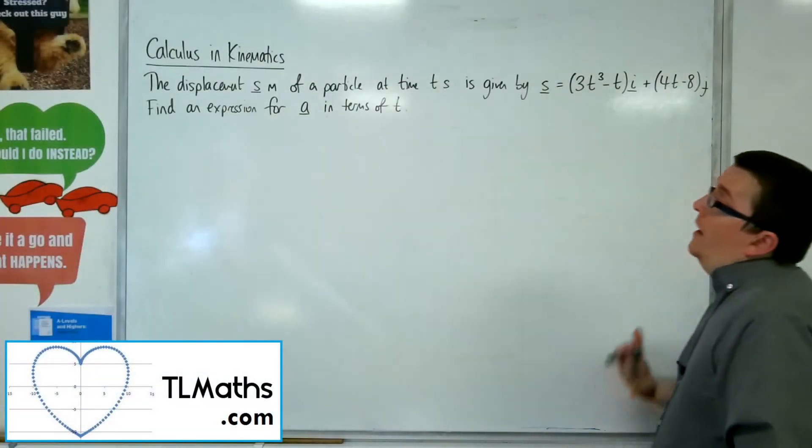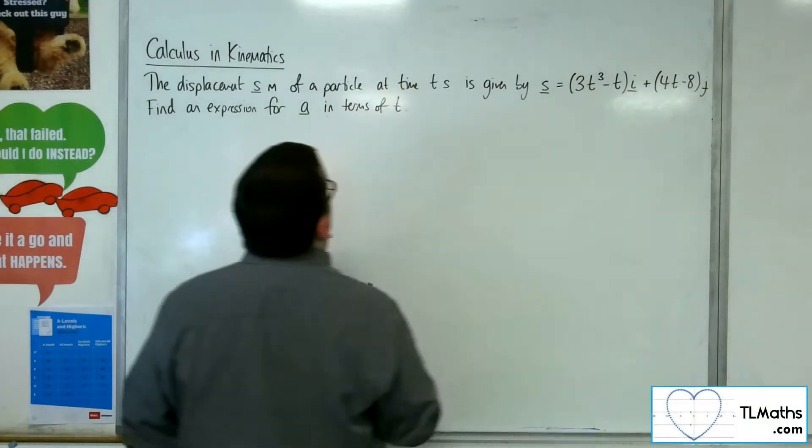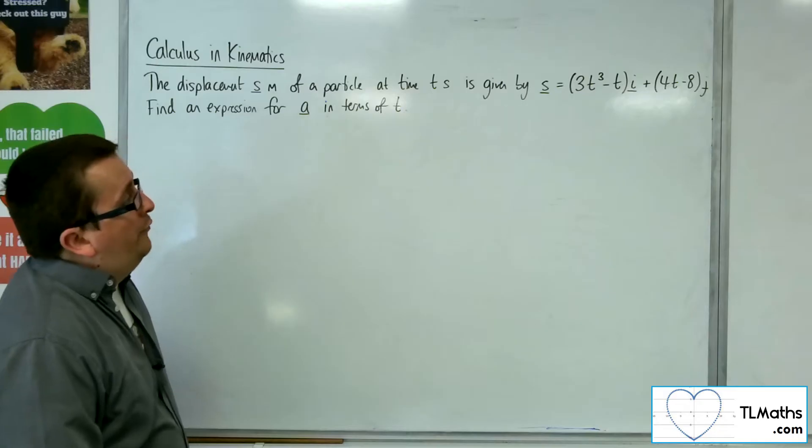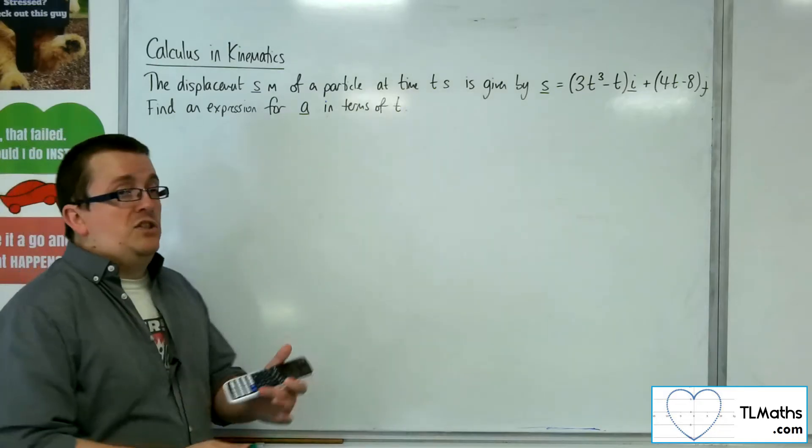In this problem, the displacement s metres of a particle at time t seconds is given by s equals 3t cubed take away ti plus 4t minus 8j. Find an expression for a in terms of t.